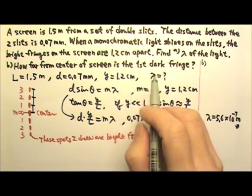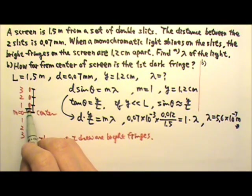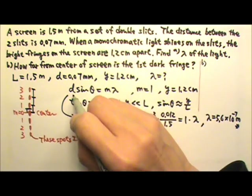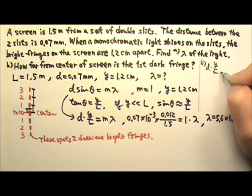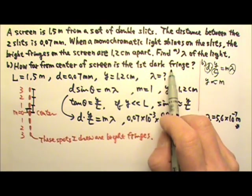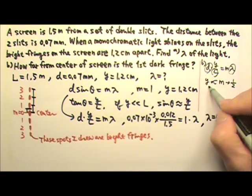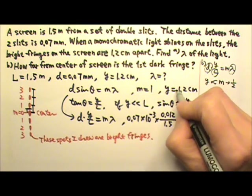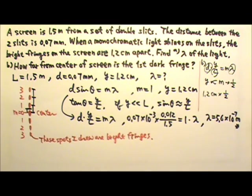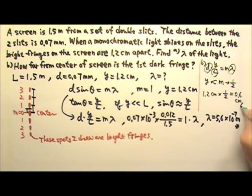For part B, we need to find the distance between the first dark fringe and the center of the screen. The first dark fringe is when M is 1.5. The equation D times Y over L equals M lambda — with small angles since Y is much smaller than L — means Y is proportional to M. Now the order number changed from M equals 1 to M equals 1.5, a factor of 1.5. So Y, which was 1.2 centimeters, must also multiply by 1.5, giving 1.8 centimeters. That's the answer for part B.